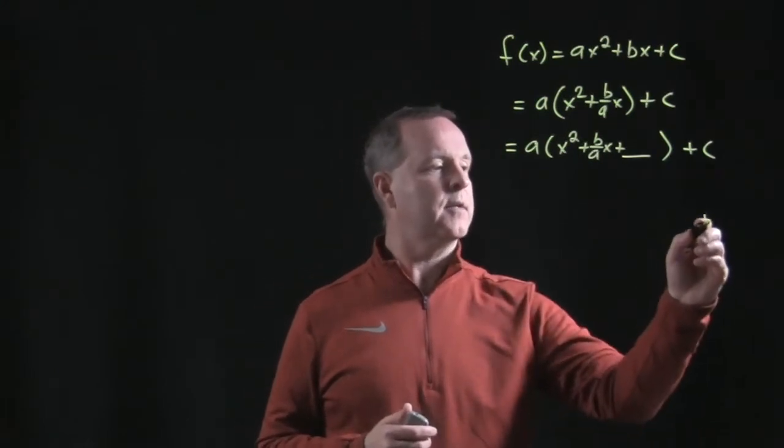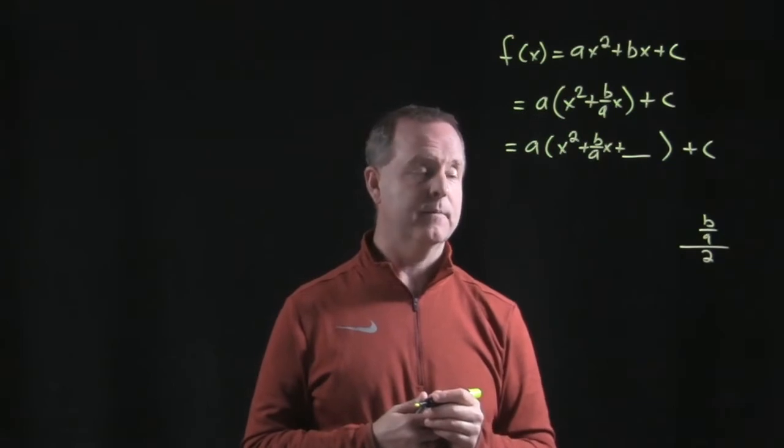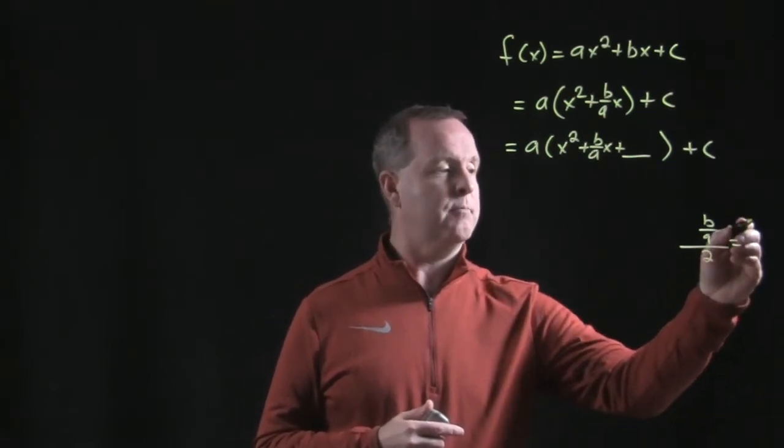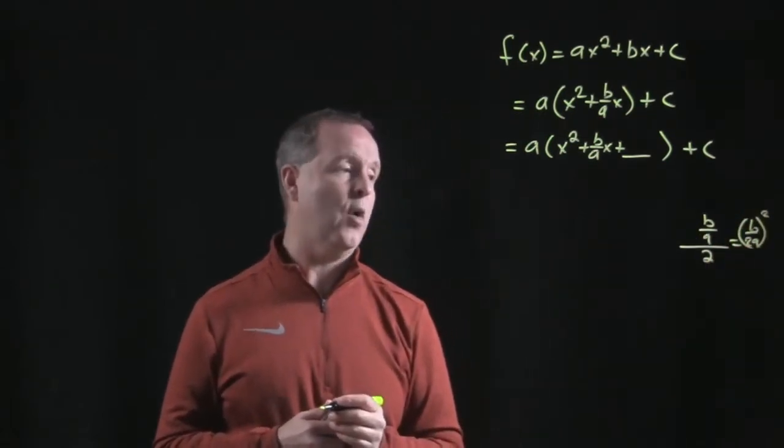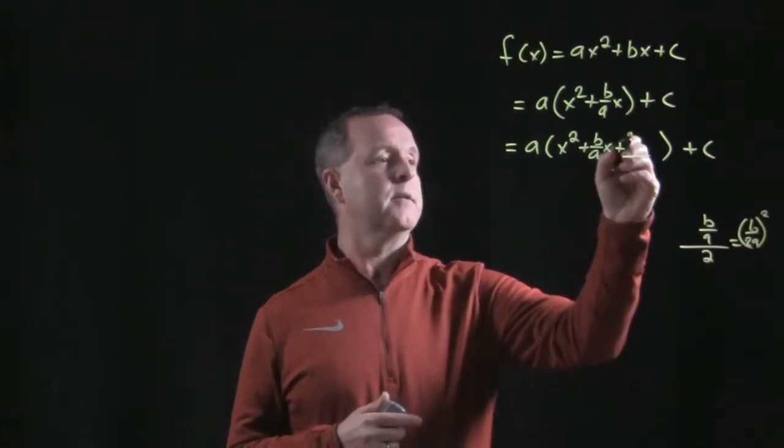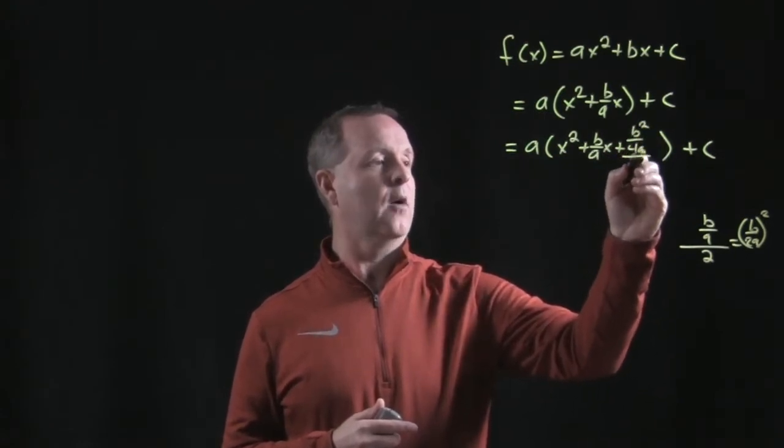So it's b over a. We divide that by 2, which equals b over 2a. And then we square it, which gives us b squared over 4a squared. So b squared over 4a squared.